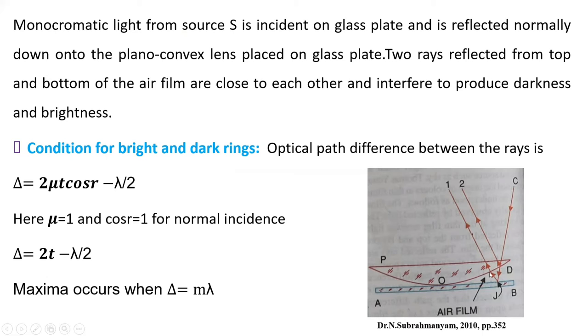And at point J, it is again reflected. And again, it goes in a direction like this. So these two rays interfere with each other to produce an interference pattern.